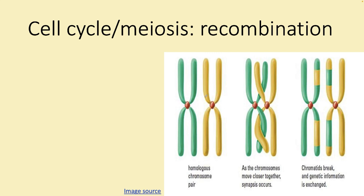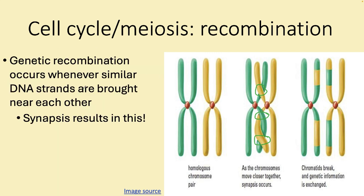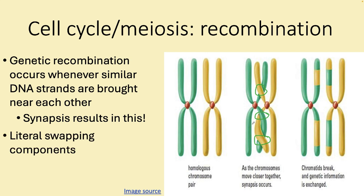Genetic recombination is a literal swapping of parts as chromosomes get closer and closer to each other. Recent studies show this has to occur two or three times within each pair. This always happens when you have synapsis — it just happens automatically, you don't need to try. It increases variety and is a literal swapping of the components.